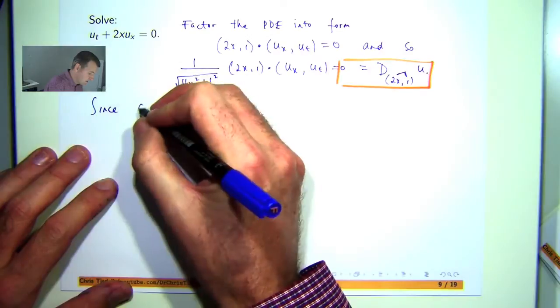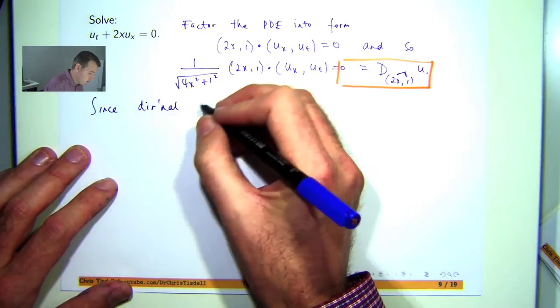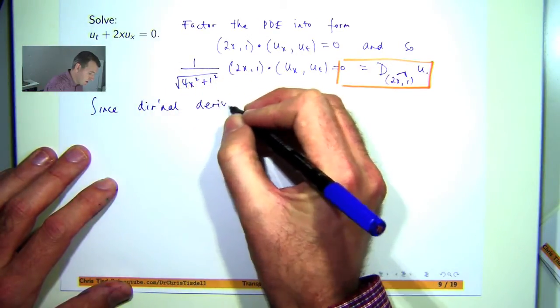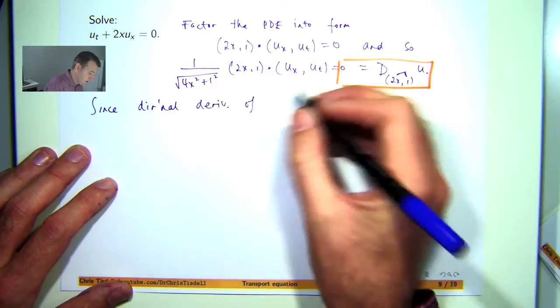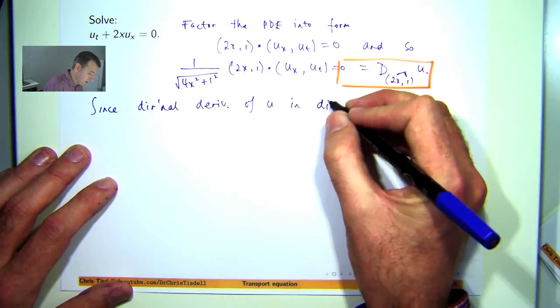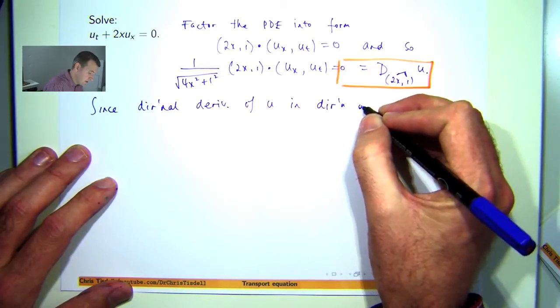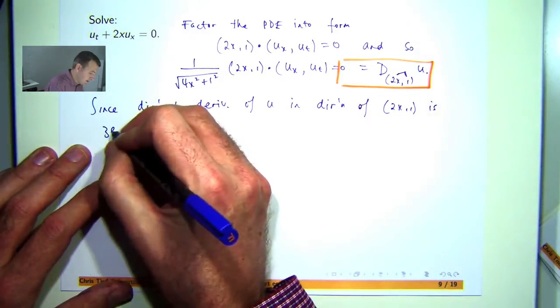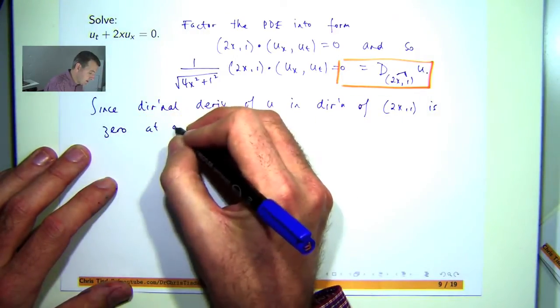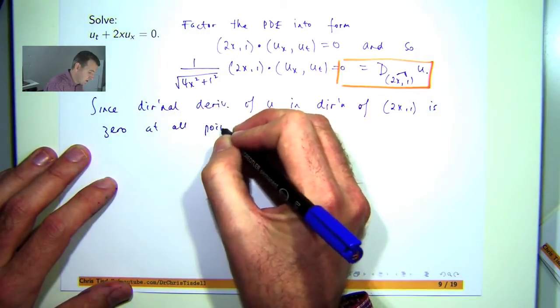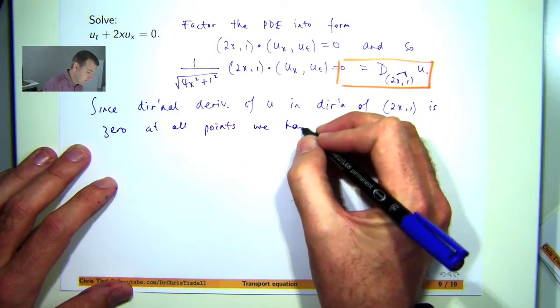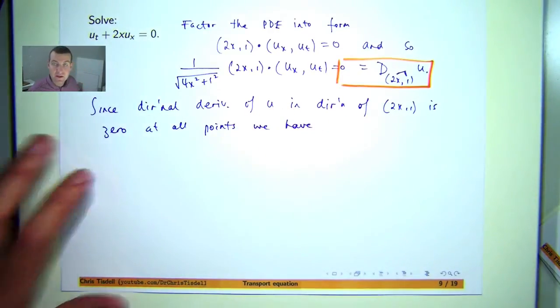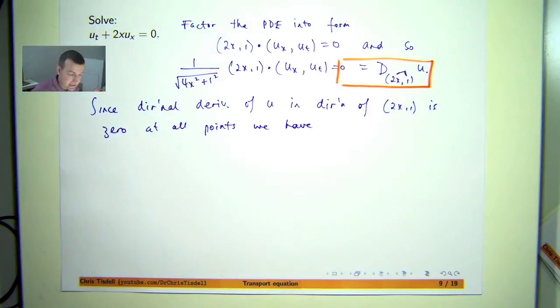So since the directional derivative of u in the direction of (2x, 1) is equal to zero at all points, we have that u is a constant along all the curves that are tangential to this vector.